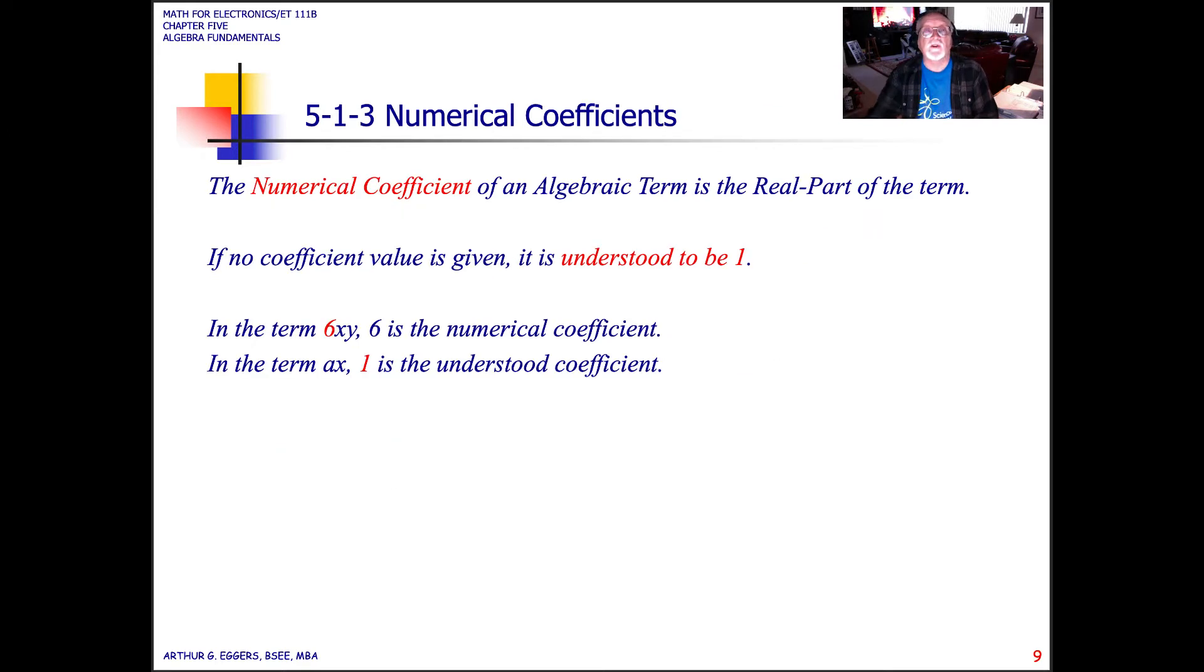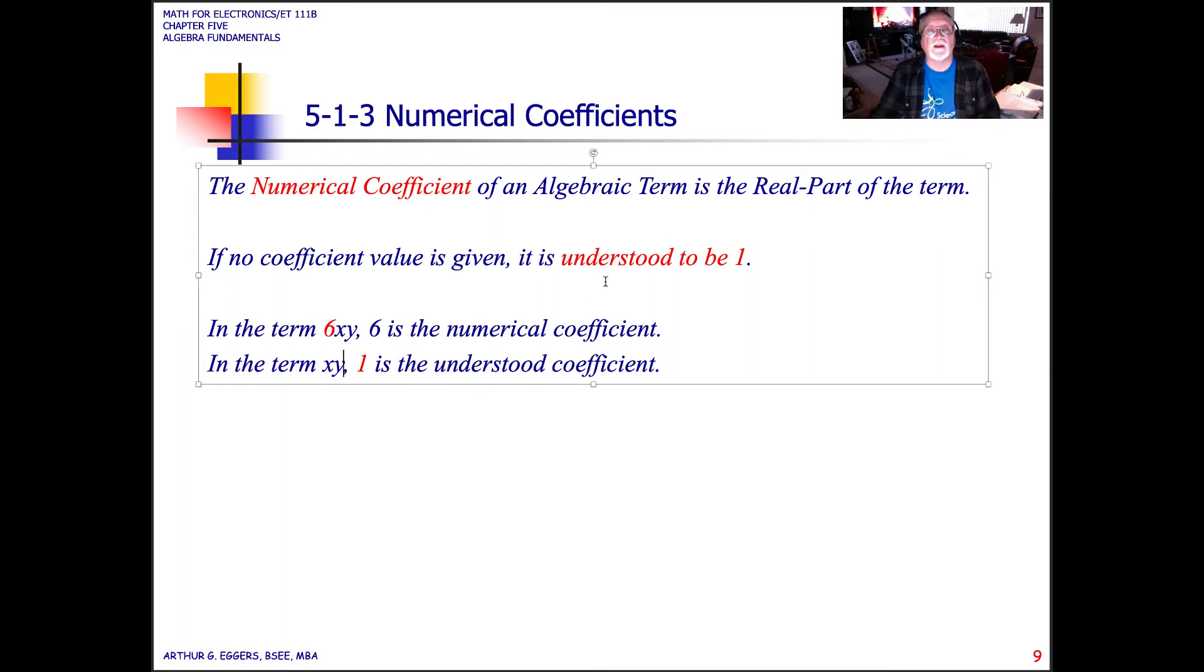The numerical coefficient of an algebraic term is the real part of the term. If no coefficient value is given, it's understood to be a value of 1. So if we look at the term 6xy, 6 is the numerical coefficient, and the term xy, the 1 is considered to be the coefficient.